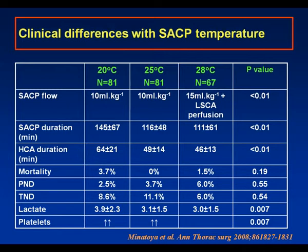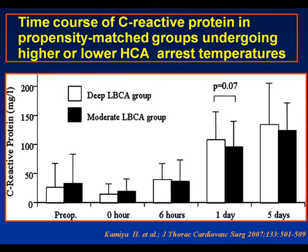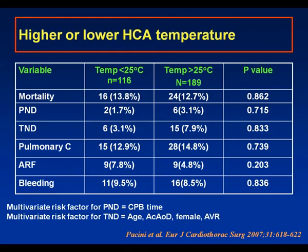Other groups have also compared higher and lower corporeal arrest temperatures. Data from Hanover studied C-reactive proteins as an index of the inflammatory response generated by the hypothermic circulatory arrest period, showing no differences in any of the groups at any time point. The Bologna group also considered corporeal arrest temperatures below versus above 25 degrees, finding similar mortalities, a not-different permanent neurological deficit rate, a slightly higher but not statistically significant transient neurological deficit rate in the higher temperature group, and similar pulmonary complications, renal failure, and bleeding.